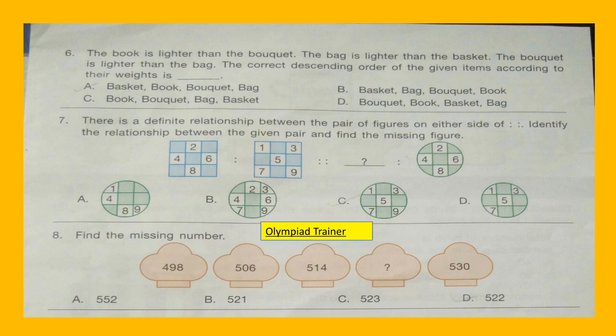Question 7: There is a definite relationship between the pair of figures on either side. Identify the relationship between the given pair and find the missing figure. The figures are given and the options are given below.